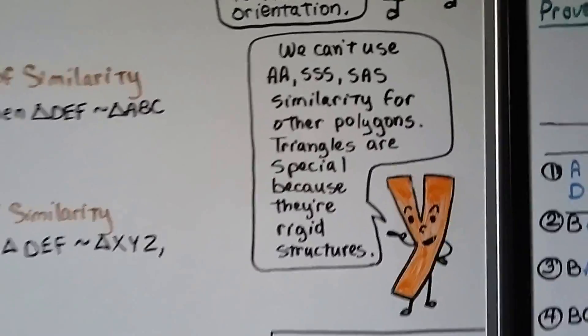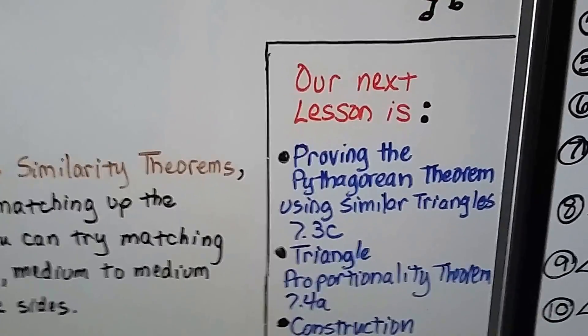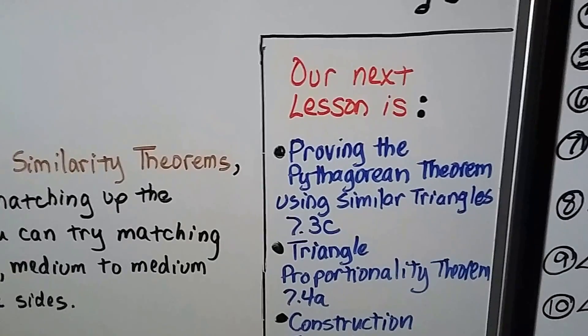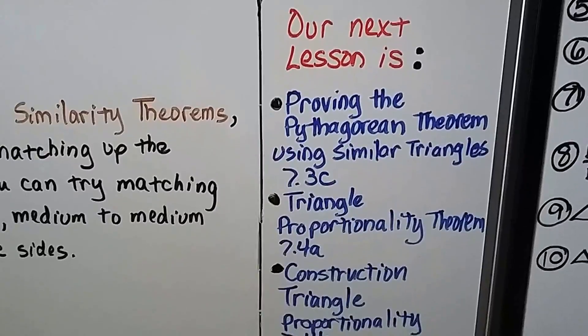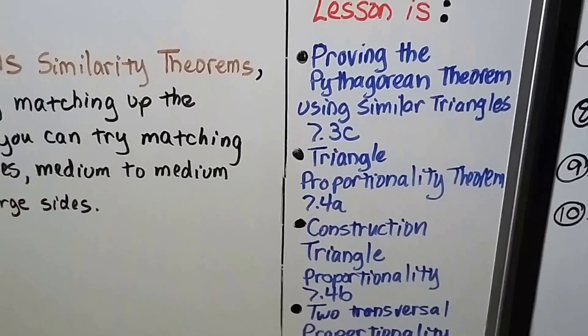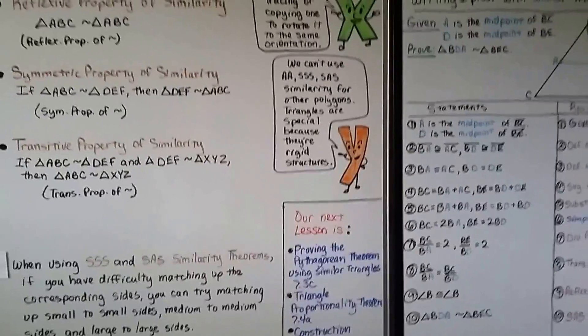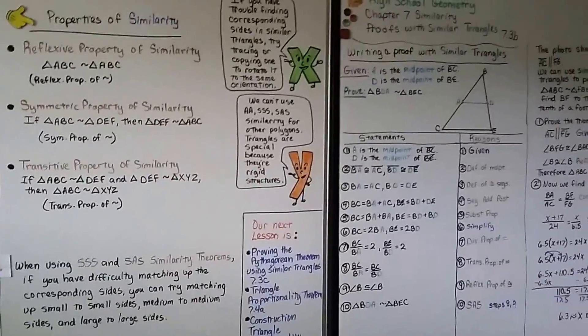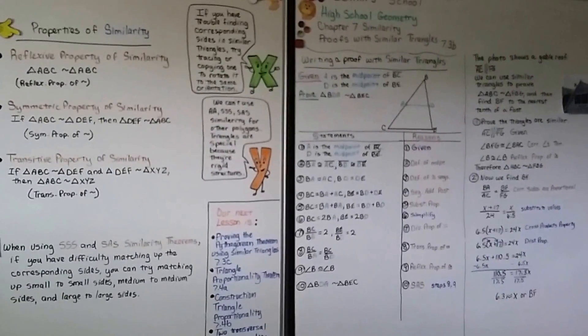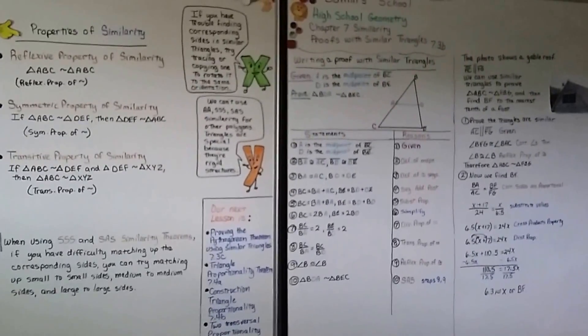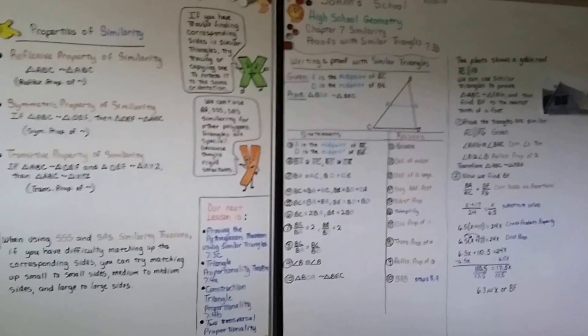So what we've been learning is for triangles. Our next lesson is proving the Pythagorean theorem using similar triangles. Then we're going to get into triangle proportionality theorem and the rest of 7.4. So now you should be able to write a proof with similar triangles, and now you should understand about similarity. I hope you're doing well, and I'll see you next time. Bye.